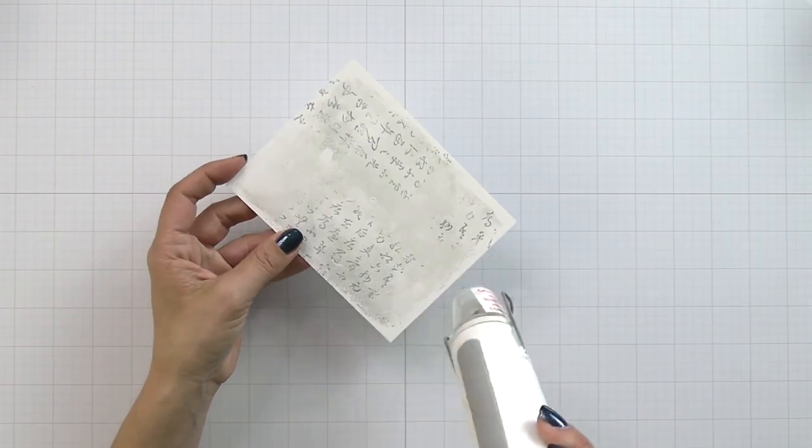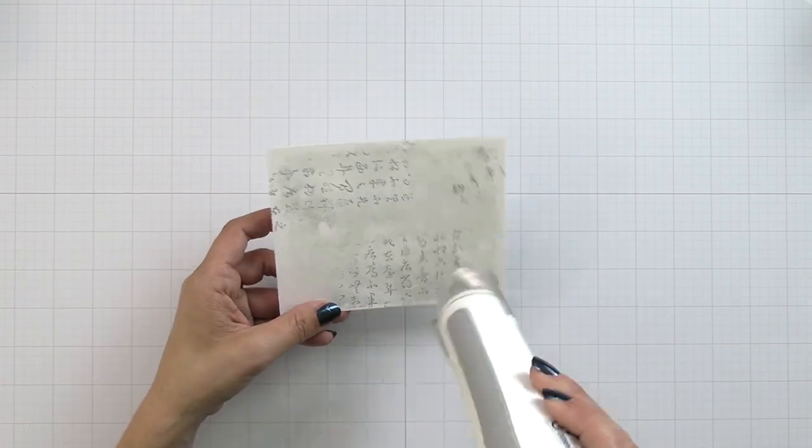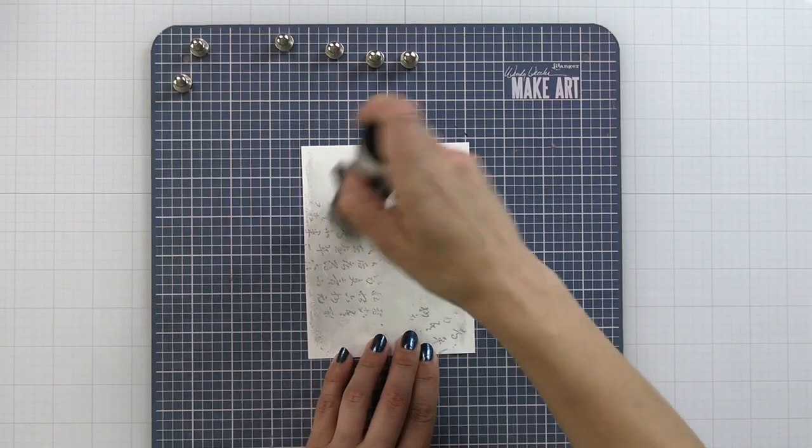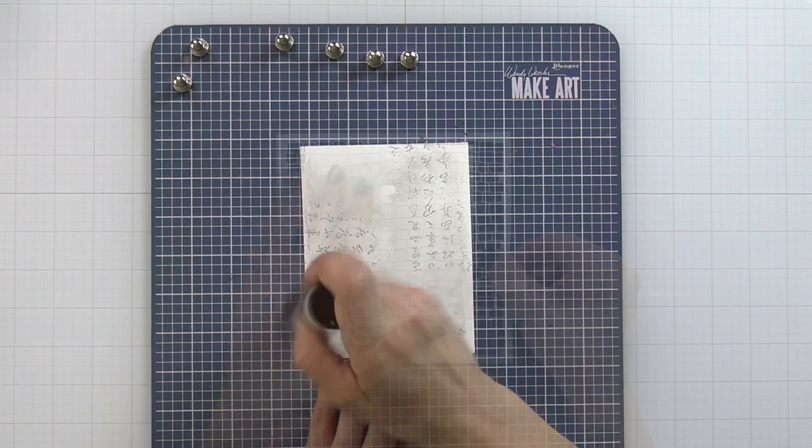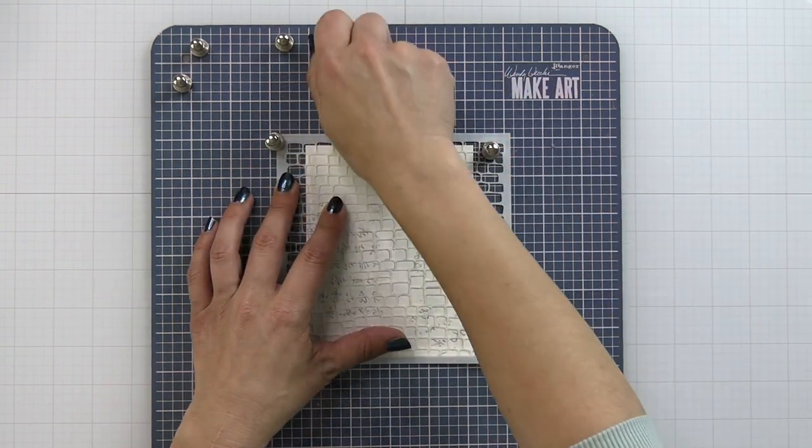Since I'm going to be doing heat embossing I want to make sure that this background is really nice and dry, so I'm speeding up that process with my heat tool. Then I'm bringing it over to my make art station which is a magnetic station. I'm going to prep the cardstock with an anti-static powder tool and bring in the cobblestone stencil.